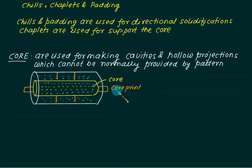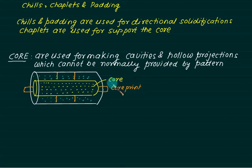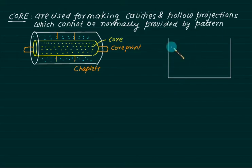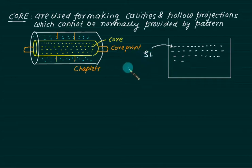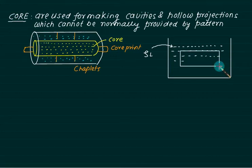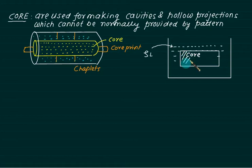We provide the core and chaplets so that the core will be in equilibrium position, because it is surrounded by molten metal. That is why we have provided the core print and chaplets. Suppose we have molten metal with density rho L. We are placing this core inside the molten metal, and for now we will only consider the core without the core print.